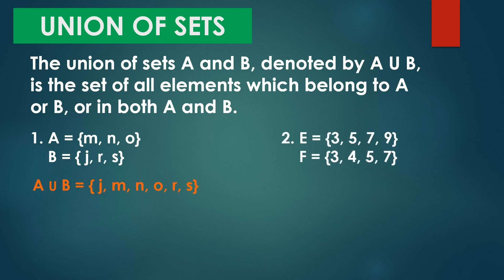Another example: set E is equal to {3, 5, 7, 9} and set F is equal to {3, 4, 5, 7}. Observe muna natin yung elements. May common elements tayo — ang common elements natin kay E at F ay 3, 5, 7. So kapag may common elements tayo, isusulat lang natin sila as one. So E union F is equal to {3, 4, 5, 7, 9}.